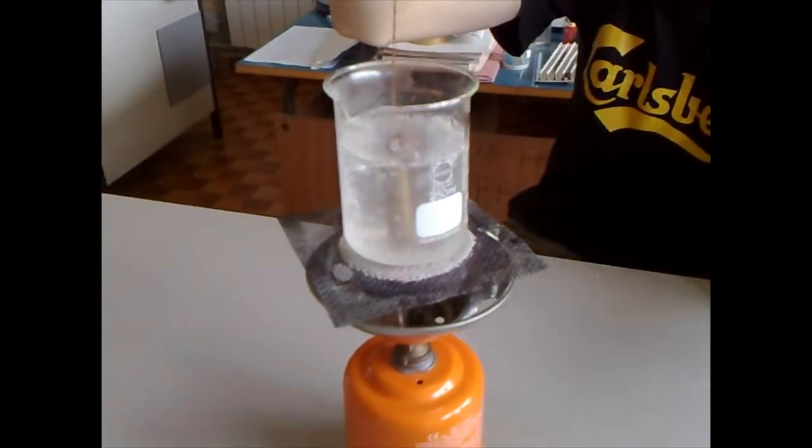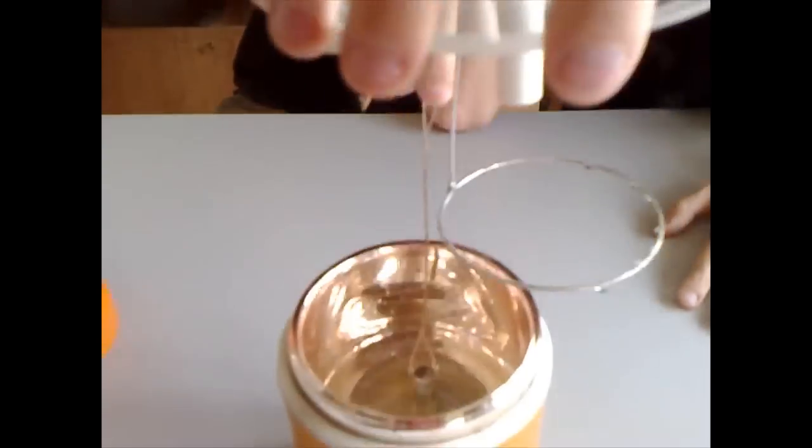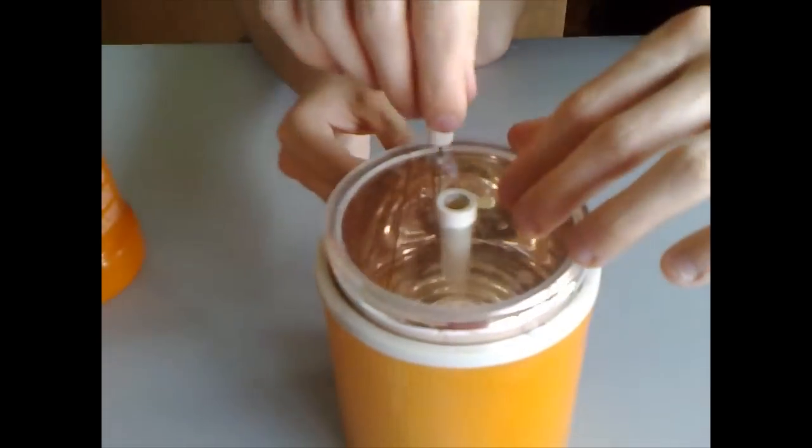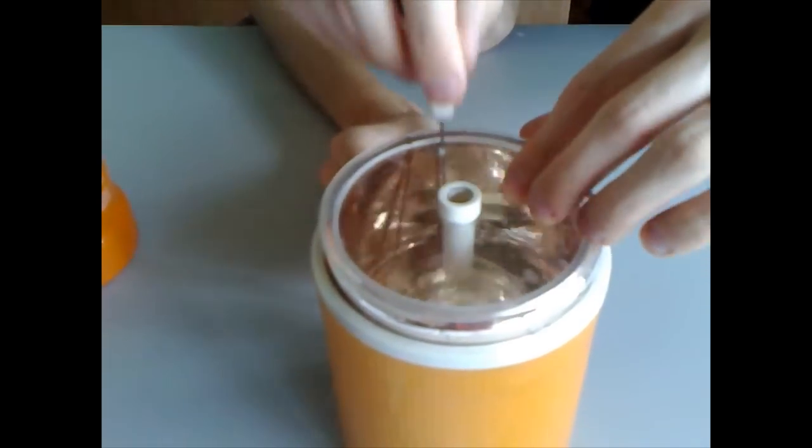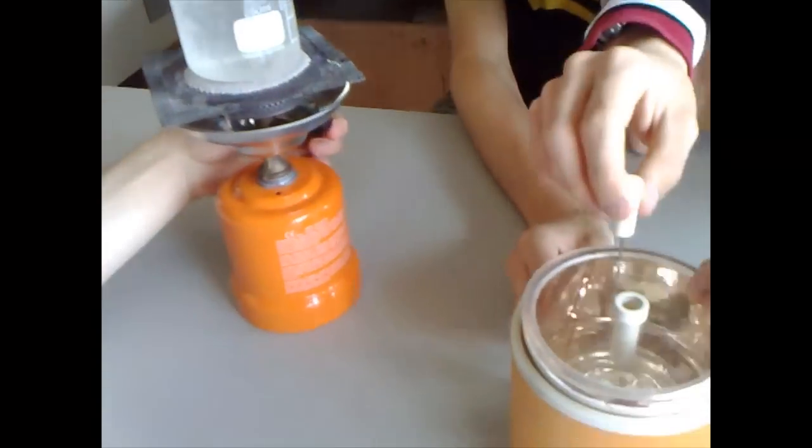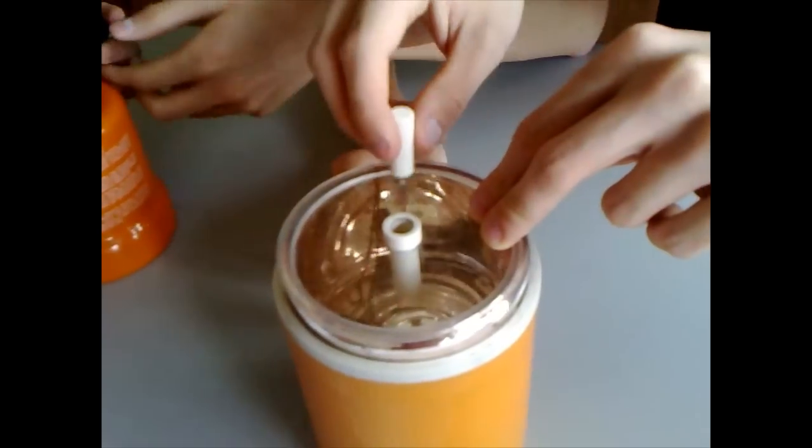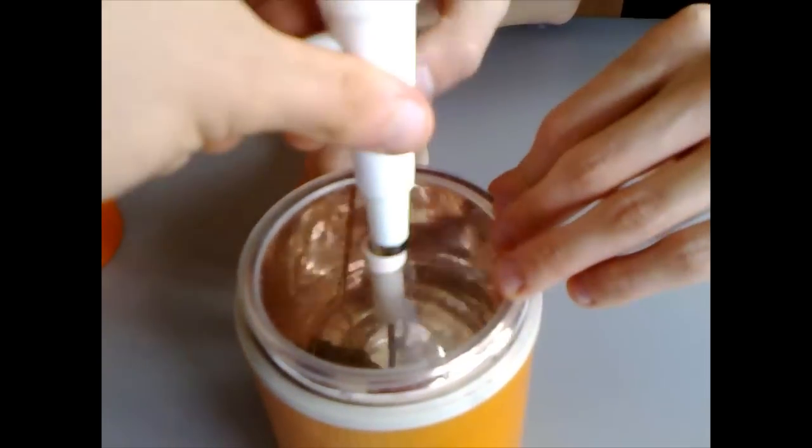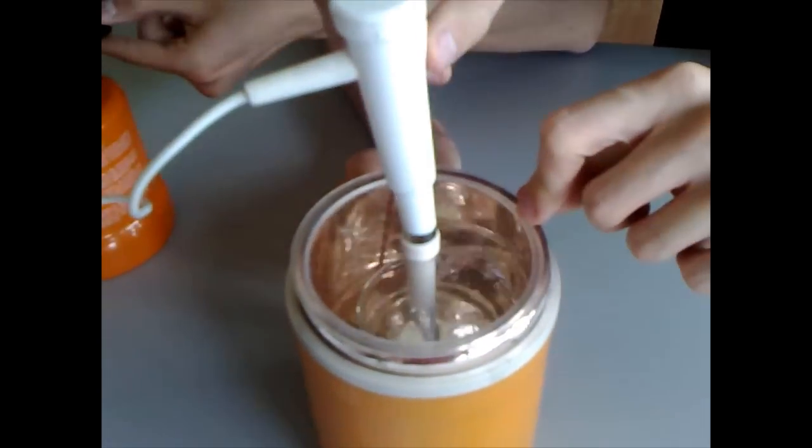Matteo removes the mass from the beaker and straight after he places it into the calorimeter. Daniel closes the calorimeter with the lid and then blends the water with the stirrer. He measures the equilibrium temperature which is 26.0 degrees.